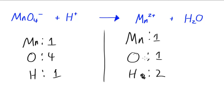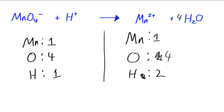So the number of manganese atoms are balanced, but the number of oxygens are not balanced and the number of hydrogens are not balanced. So the first thing I'm going to do is balance out the number of oxygens. I'm going to multiply the oxygens on this side by four, so I'll put a four in front of H2O. Now we've got four oxygens on each side.